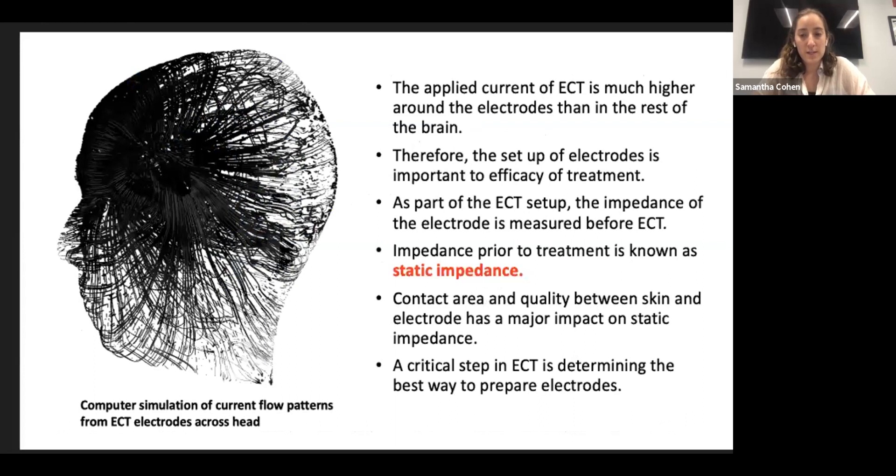During the administration of ECT, current density is much greater in the area surrounding the electrodes than in the rest of the brain. This is because current is entering the body via the electrodes. During the setup of ECT, the impedance of the electrode is measured with currents much smaller than those of the treatment. Impedance prior to treatment is called static impedance. Both the contact area and the quality of the skin electrode interface influence static impedance. As such, they are important in the setup of treatment.